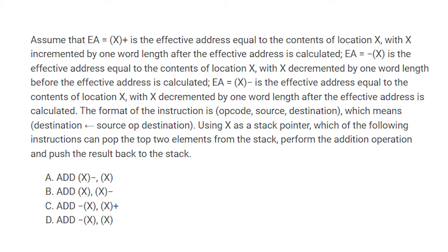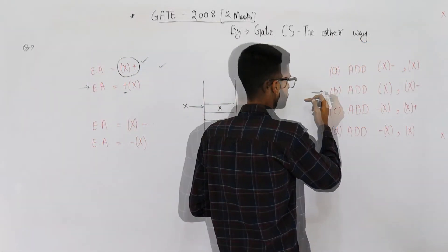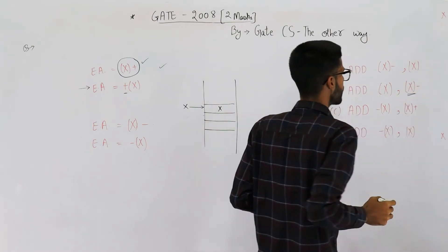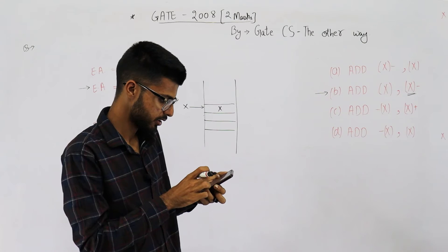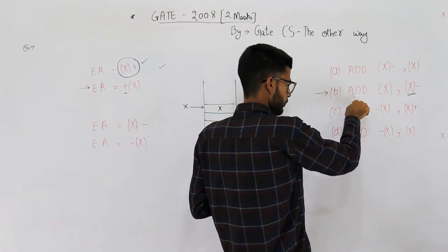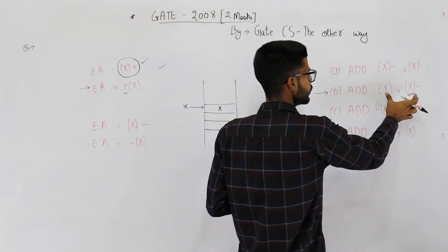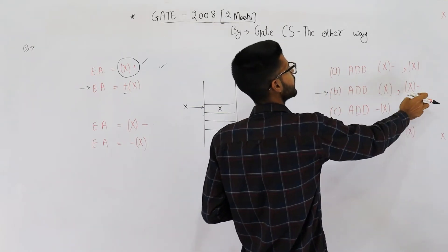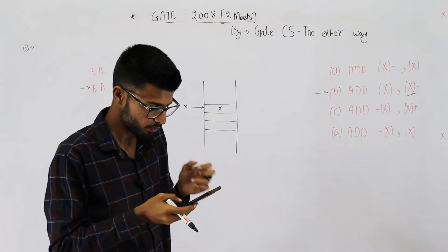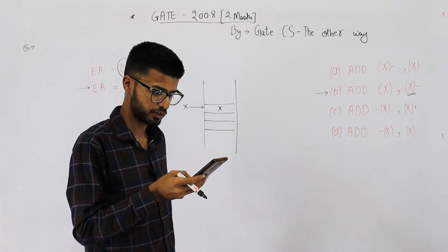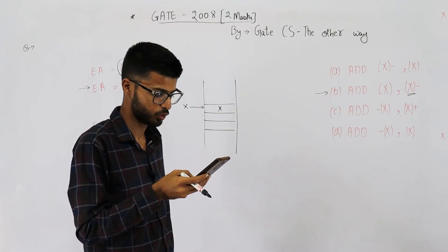The format of the instruction is opcode, source, destination, which means: destination = destination operation source. So for example, the second operand is the destination — you add both of them and save the result back into the second operand. Using x as the stack pointer, which of the following instructions can pop the two elements from the stack?